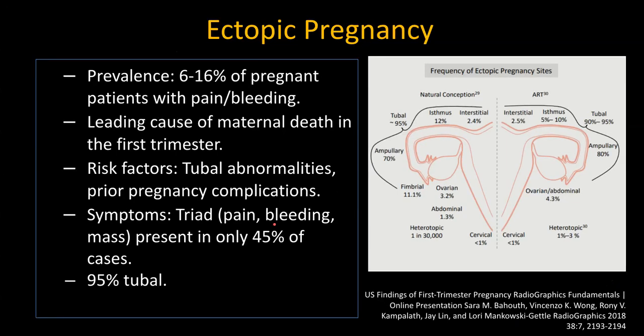The most important pathology in the pelvis that presents as an emergency is ectopic pregnancy, seen in about 6% to 16% of pregnancies presenting with pain or bleeding. Most importantly, it is the leading cause of maternal death in the first trimester, making it a very important diagnosis. The risk factors include tubular abnormalities, prior pregnancy complications, and prior ectopics.